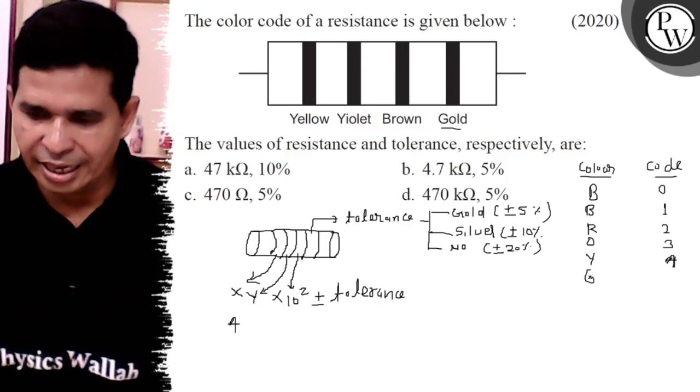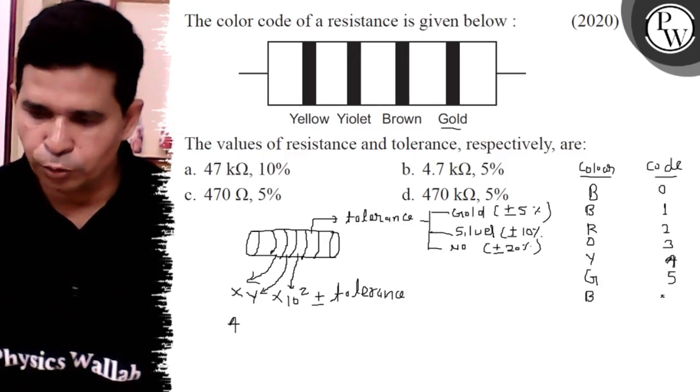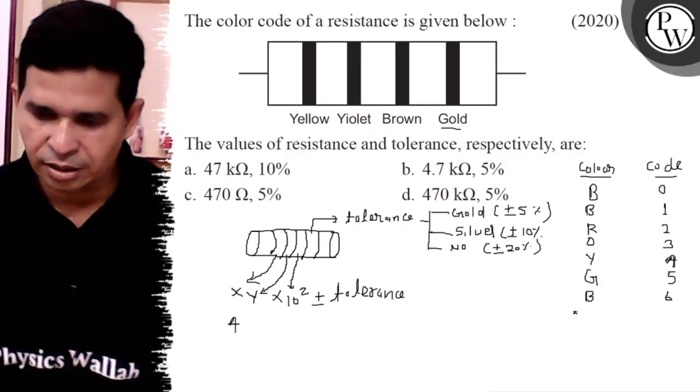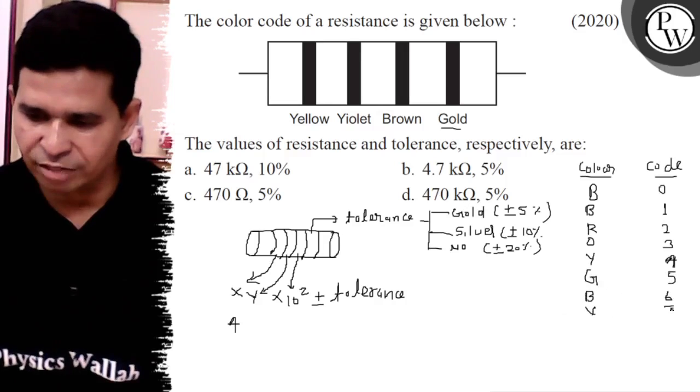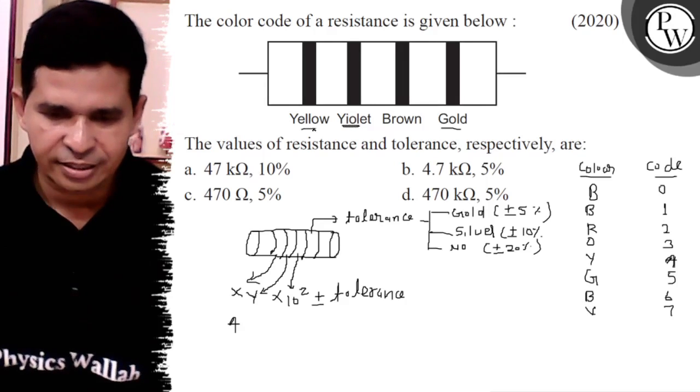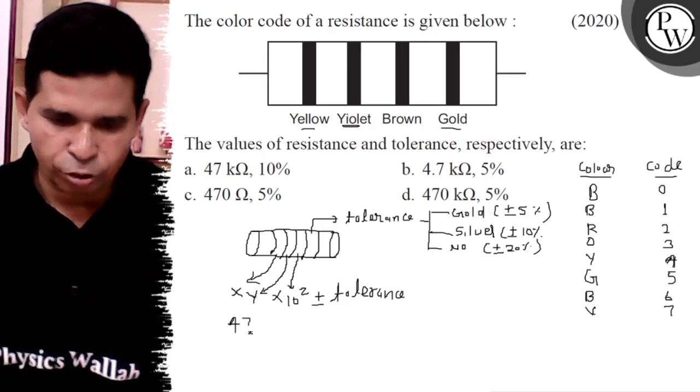Green is 5, blue is 6, violet have the 7, so second color is violet, so it is the 47.